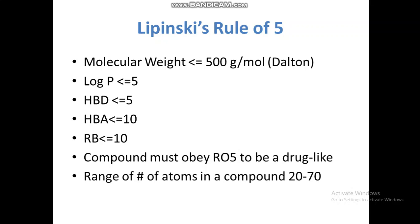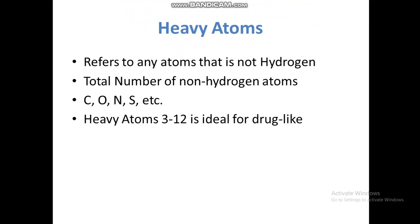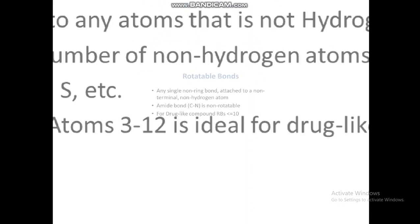The range of number of atoms in a drug-like compound should be between 20 and 70. We also use the term heavy atom, which refers to any atom that is not hydrogen — so carbon, oxygen, nitrogen, sulfur, etc. are all heavy atoms. For an ideal drug-like compound, the number of heavy atoms should be between 3 and 12.